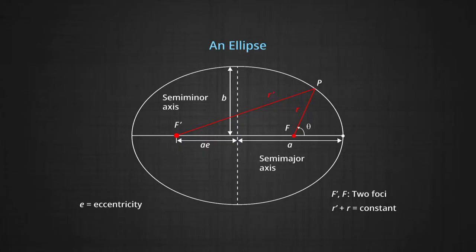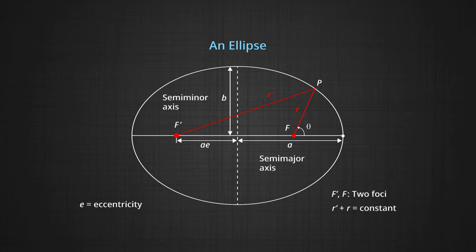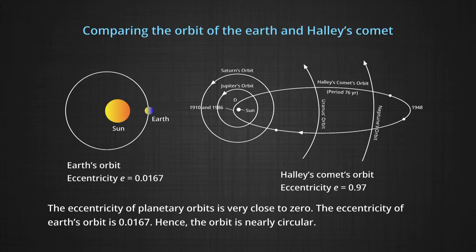In this figure of the ellipse, F and F' are the foci. A is the semi-major axis and B is the semi-minor axis. The eccentricity is the ratio of the distance from the center to the foci and the semi-major axis A. If the eccentricity is zero, the ellipse will become a circle and the two foci will coincide. The eccentricity of planetary orbits is very close to zero.